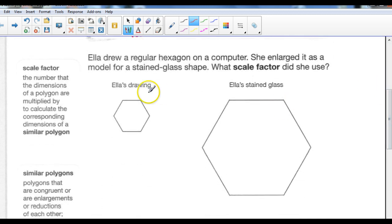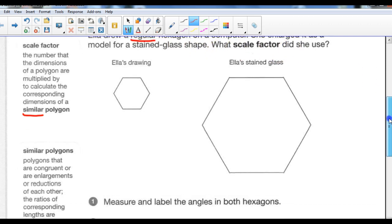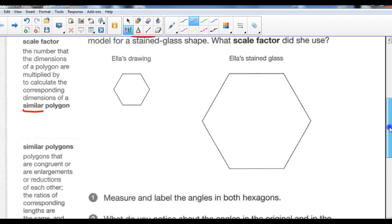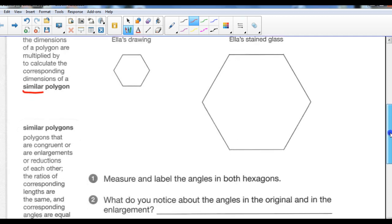Scale factor. We're going to be talking about scale factor. You've already heard that mentioned in some previous videos. It's the number that the dimensions of a polygon are multiplied by to calculate the corresponding dimensions of a similar polygon. So here we got two hexagons. Ella drew a regular hexagon on a computer. The word regular here means that all the lengths are the same. She enlarged it as a model for a stained glass shape. What scale factor did she use? In other words, how much bigger is this than this? We know they're exactly the same shape, exactly the same angles, exactly everything's the same except that this one is bigger by a scale factor. So the only way we can do that to see how much bigger she made this one is we take your ruler and we're going to measure the angles and we're going to measure the lengths.